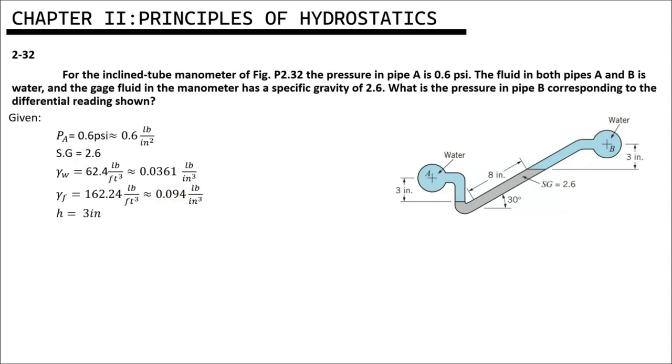And the height is 3 inches. We are asked to determine the pressure in pipe B corresponding to the differential reading shown. Solution: Since our assumption is positive if it is downward and negative if it is upward,